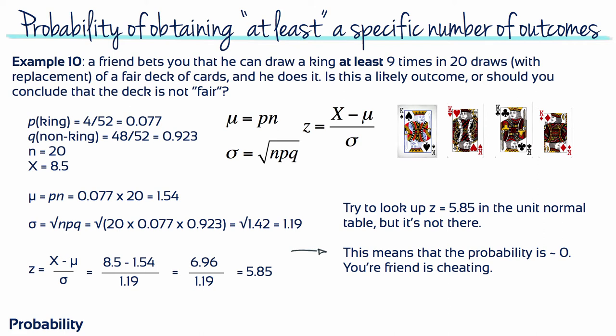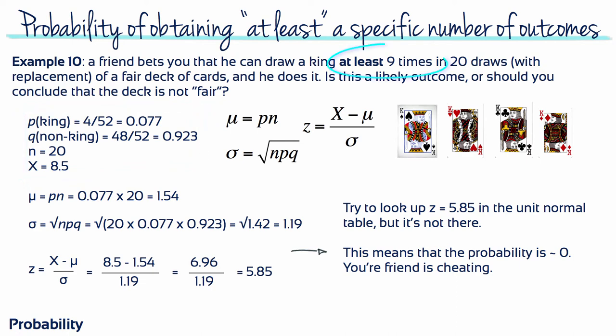Example 10: A friend bets you that he can draw a king at least 9 times in 20 draws with replacement from a fair deck of cards, and he does it. Is this a likely outcome, or should you conclude that the deck is not fair and that your friend is cheating? The probability of choosing a king is 4 out of 52, or 0.077, while the probability of choosing any other card is 48 out of 52, or 0.923. N equals 20, and the X value is 8.5, because the problem asks for at least 9 times — we need to include 9 and above — so we use the lower real limit for 9, which is 8.5.